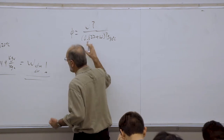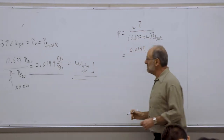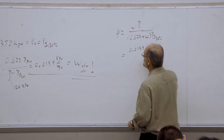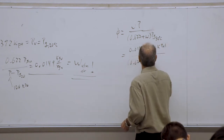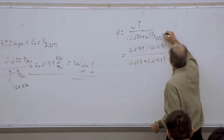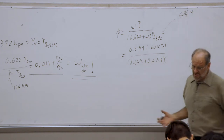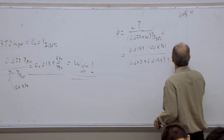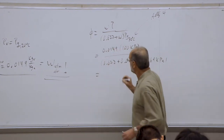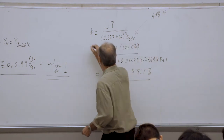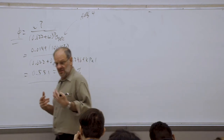Plugging in all the numbers: omega of the atmospheric air is 0.0149, the total pressure is 100 kilopascals, then 0.622 plus 0.0149. P_G at 30 degrees Celsius must be looked up from table A4, and we find it is 4.2469 kilopascals. Going through the math, the relative humidity is 0.551, or 55.1%. We have now determined both the absolute and relative humidity using the dew point.